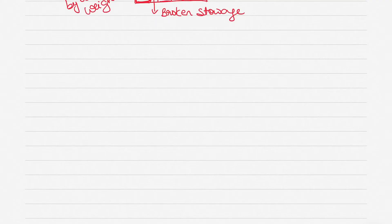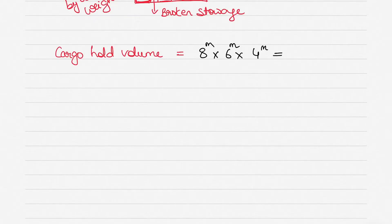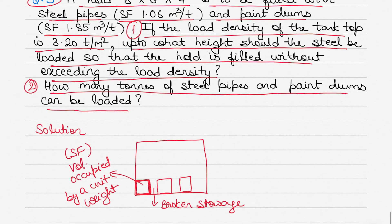Let's get started solving the question. We have been given the dimensions of the cargo hold, so we can find the cargo hold volume. I've decided to solve these questions together with you so it's easy to follow what I do and why. Cargo hold volume = 8 × 6 × 4 meters = 192 cubic meters.